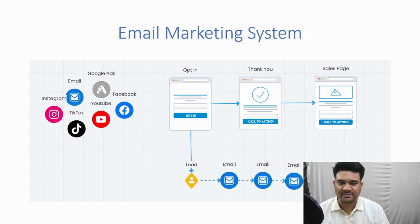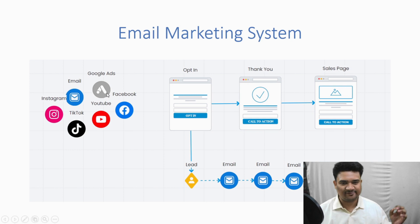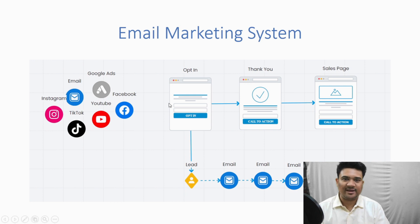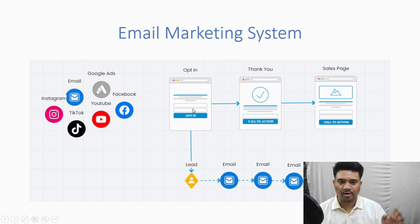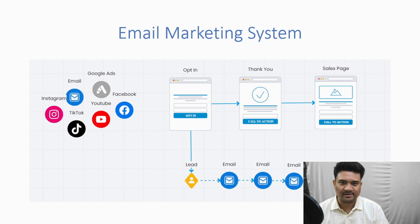Any business that does not implement an email marketing system is losing a lot of money. The first thing we need to do is send our traffic to our opt-in page. Once the audience comes to your opt-in page, you need to provide them with some value or a gift in exchange for their email address. When someone opts in, that person goes to your list, and the list is the asset of any online business.